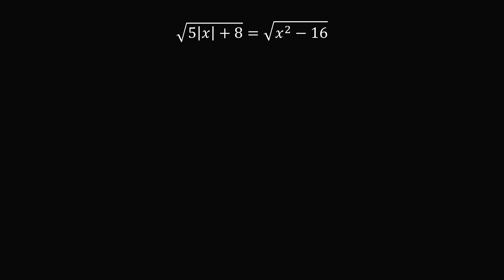Now let's solve Problem 2. We have a square root on both sides of the equation, so we will square both sides. Since we squared both sides, we want to make sure we don't create any extraneous roots, so we'll check the answers at the end. The equation becomes: 5 times the absolute value of x plus 8 is equal to x squared minus 16.